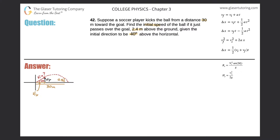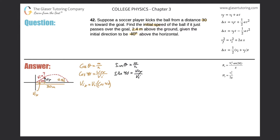I know this angle and I'm looking for the side adjacent to that angle, so I'll use cosine. Cosine of 40 equals the initial velocity in x divided by the hypotenuse, which is the initial velocity. Solving: vix = v·cos(40). For the y direction, we use sine. Sine of 40 equals the initial velocity in y over the initial velocity. So viy = v·sin(40). Both x and y components are positive — x points right, y points up.